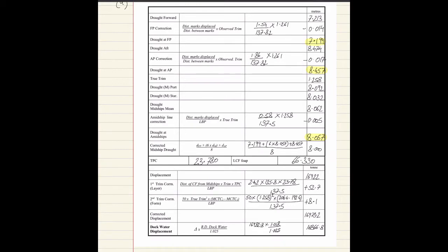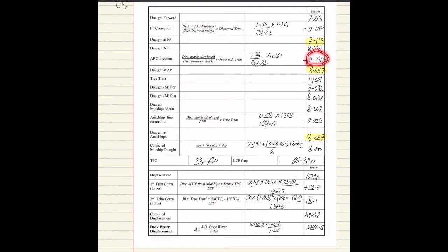The aft draft is 8.474 meters as given. For the aft perpendicular correction, we use the same formula: distance marks are displaced divided by distance between marks, multiplied by observed trim. Distance displaced is 1.86 meters divided by 137.82 meters, multiplied by the observed trim. This gives a numerical value of 0.017 meters.